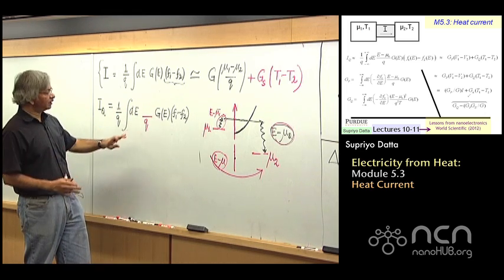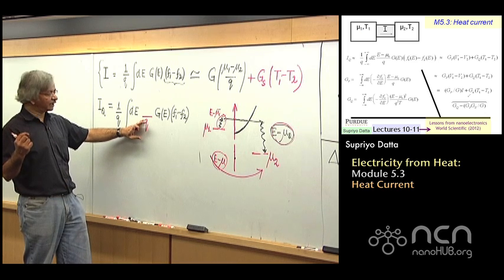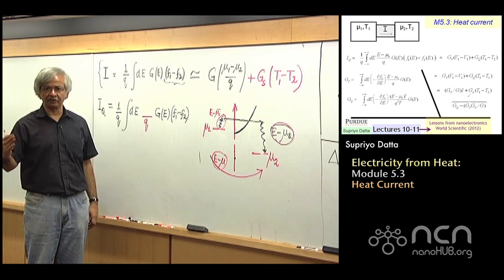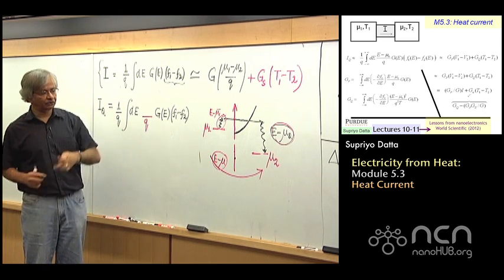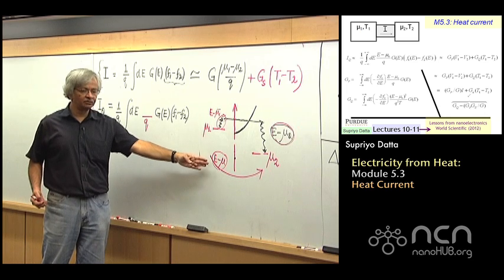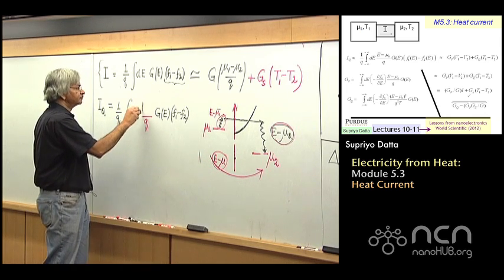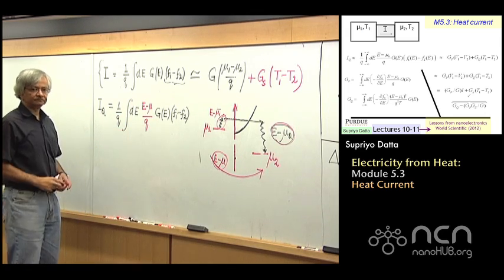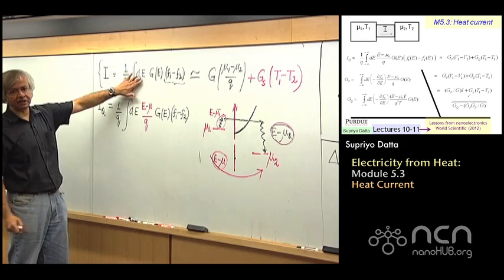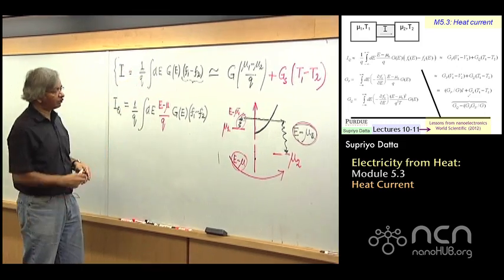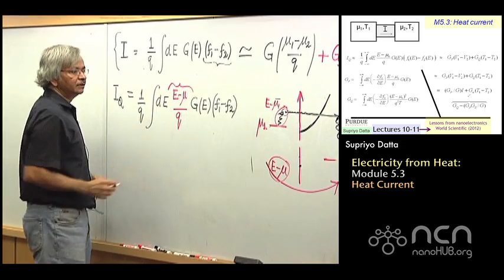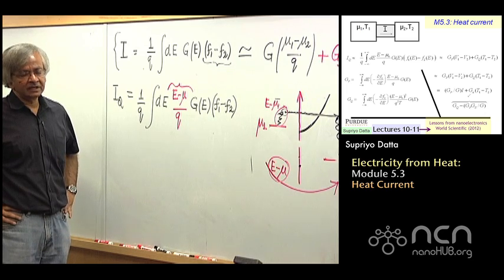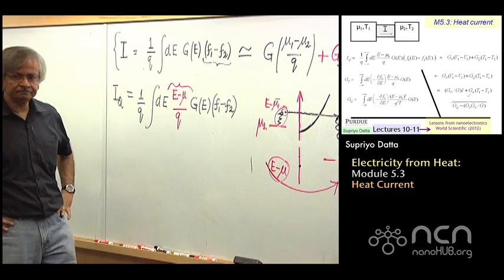So if I take this and just divide it by Q, what I'll get is how many electrons are actually flowing per second. So what I had here is the charge current. I divide by Q. Every electron carries a certain amount of charge Q, divided by that. So it tells me how many electrons per second are going across. And then I note that every electron that goes across carries an amount of heat, E minus mu. So I could put that here. And that then will be my expression for the heat current through the system.